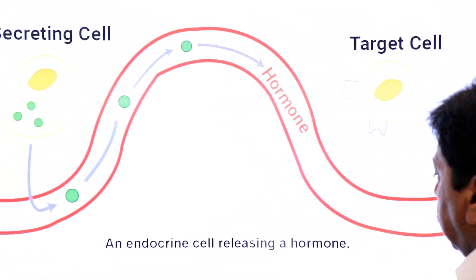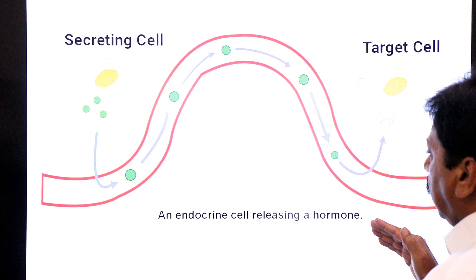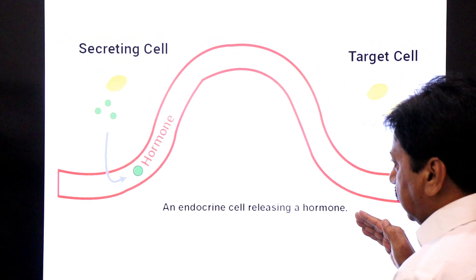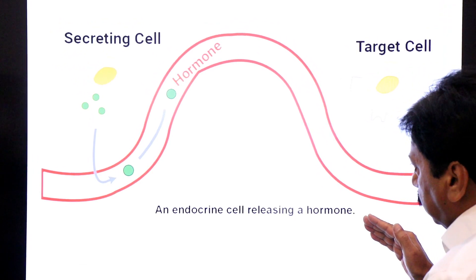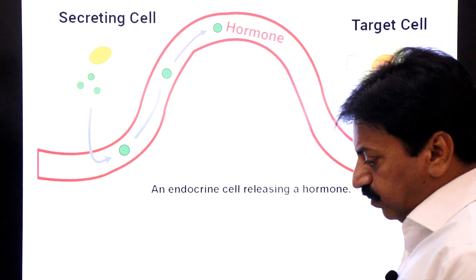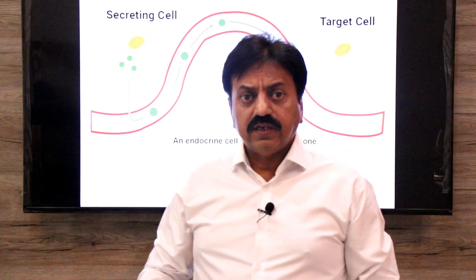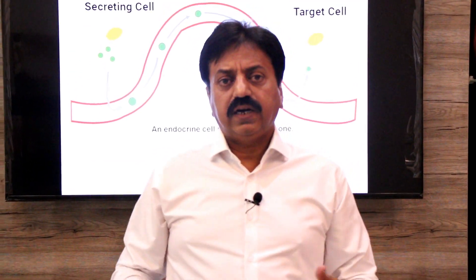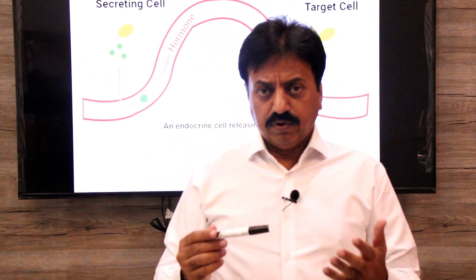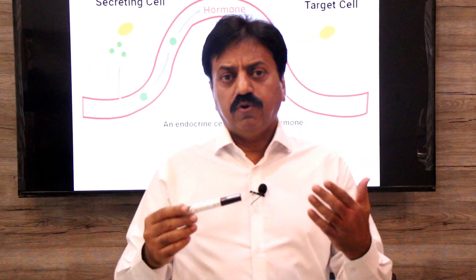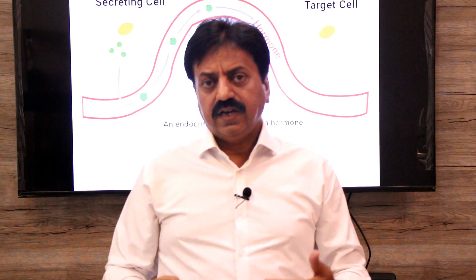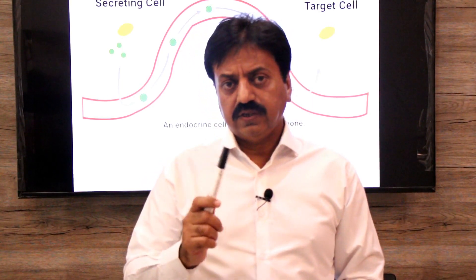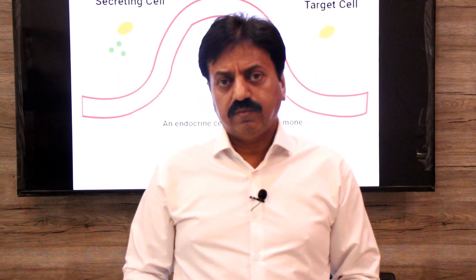The releasing of a hormone by an endocrine cell is an example of exocytosis. To summarize, active transport has three examples: protein pumps, endocytosis, and exocytosis. Thank you dear students, wishing you all the best.